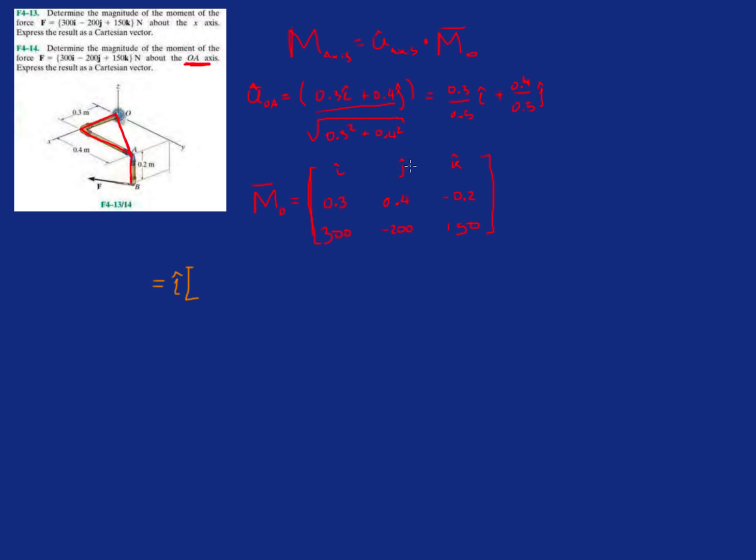So we're going to have i. It's going to be 0.4 times 150 minus 0.2 times 200. Negatives go away because it's negative times negative.